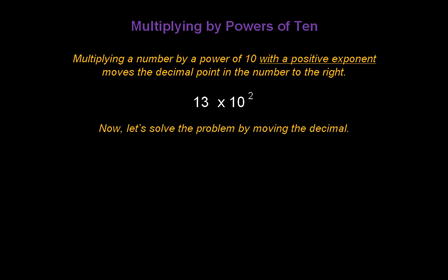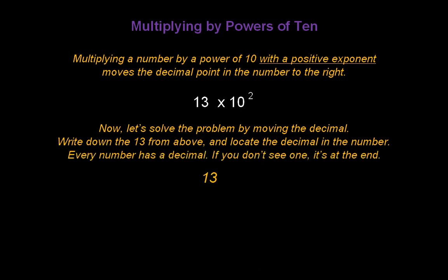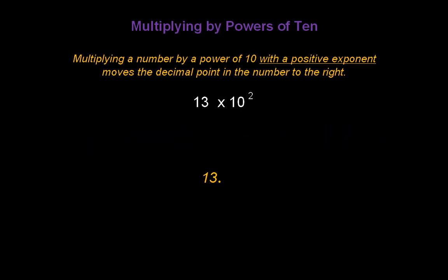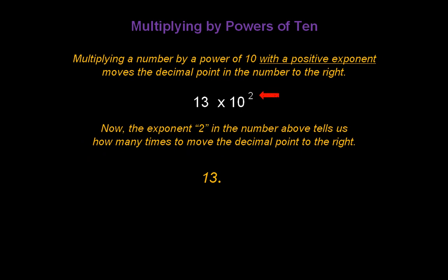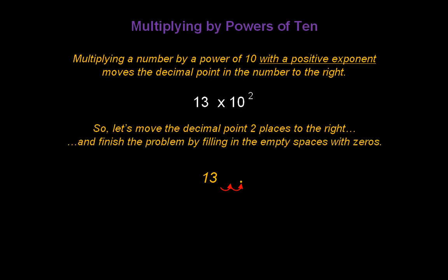Now let's solve the problem by moving the decimal. Write down the 13 from above and locate the decimal in the number. Every number has a decimal, so if you don't see one, as we don't in this number, place it at the end. The exponent 2 tells us how many times to move the decimal point to the right. So let's move the decimal point two places to the right: one, two. Finish the problem by filling in the empty spaces with zeros. The answer is 1,300.